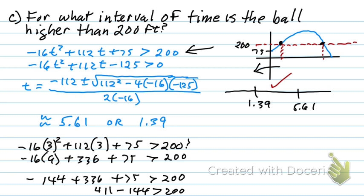We could test all three of them but what we're going to find out is this one doesn't and this one doesn't. So it's not a disjoint kind of thing. It's not a union kind of thing. So what's our answer? Well between 1.39 and 5.61 seconds. We're looking for this interval right here.